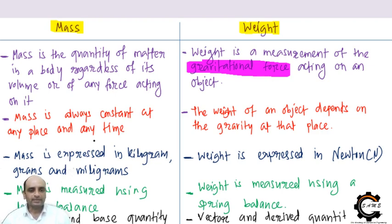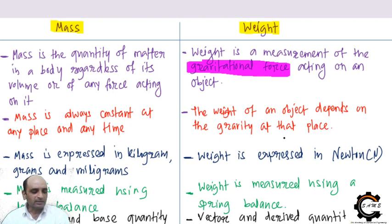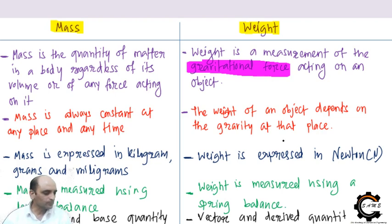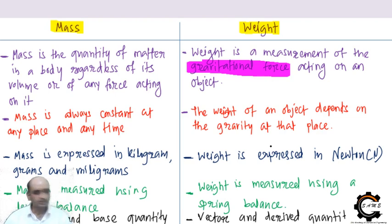Mass is always constant at any place and time — mass is conserved. But weight depends on place to place, because it depends on the local value of gravity. On Earth, g = 9.81 m/s². On the Moon, it is almost one-sixth of this. So if you move to another planet, gravity changes and your weight changes, but your mass stays the same.